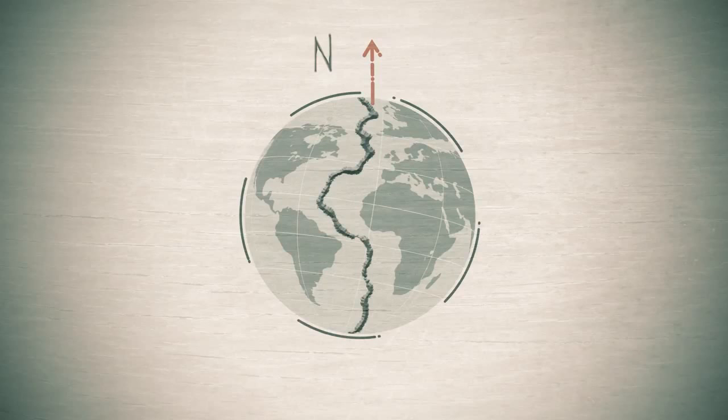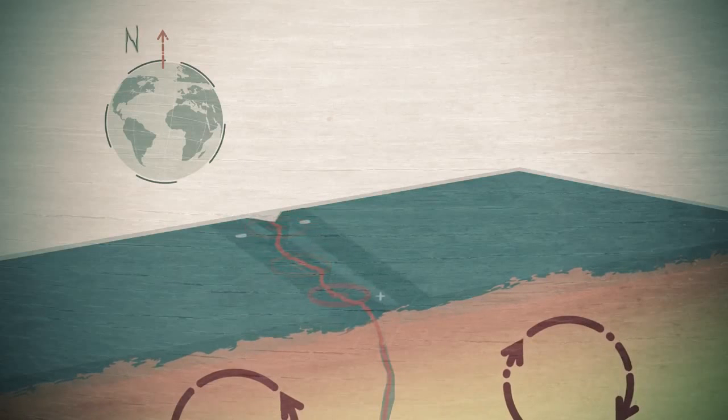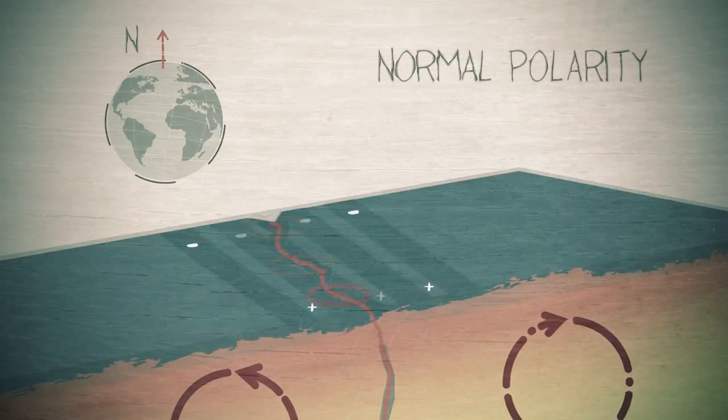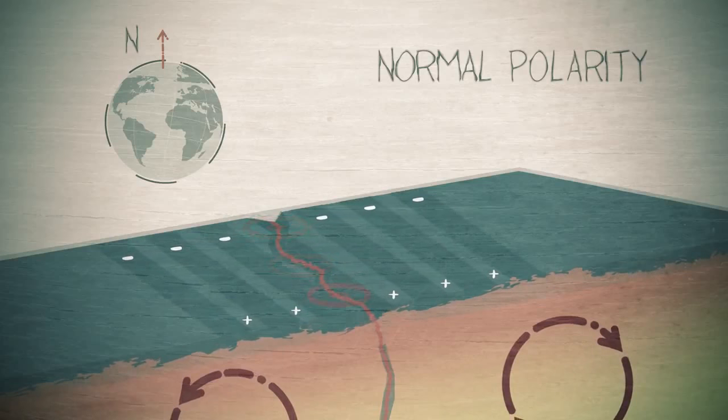However every few million years the earth's magnetic field flips so the north magnetic pole becomes south pole and vice versa, and this change is signaled in the rocks. Scientists found that the rocks each side of the mid-ocean ridge were magnetized first in one direction and then in another like this.